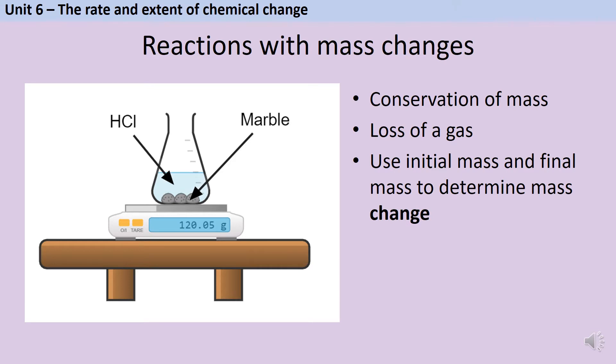The law of conservation of mass tells us that no atoms are created or destroyed in a chemical reaction, and that means that the mass of the reactants must be equal to the mass of the products. However, some reactions may appear to change mass, and this happens when one of the reactants or products is a gas. We can use this in order to help us calculate the rate of a reaction.